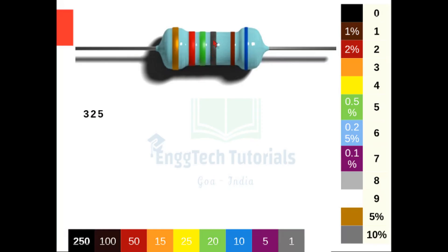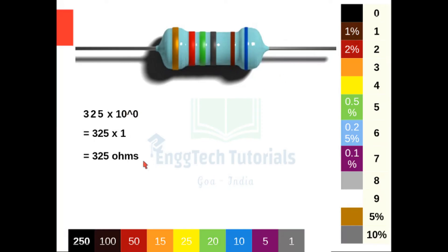Then the multiplier is black, and black corresponds to 0, so it will be into 10 raised to 0. 10 raised to 0 is 1, so it will be 325 into 1 — that is 325 ohms. The tolerance level is brown, and brown has a tolerance of 1%, so this will be 325 ohms plus or minus 1%. The temperature coefficient color is blue, and blue corresponds to 10, so we write this as 325 ohms, plus or minus 1%, at 10 ppm per Kelvin.